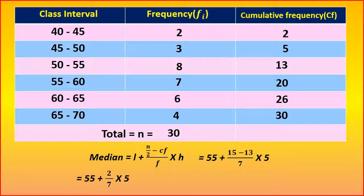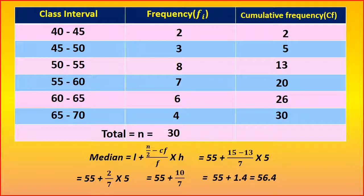Then 55 plus 2 by 7 into 5. 55 plus 2 into 5 is equal to 10 by 7. If you divide 10 by 7, you will get 1.4. Add to 55, that will become 56.4.